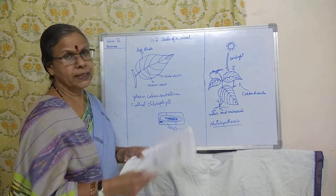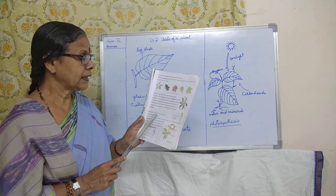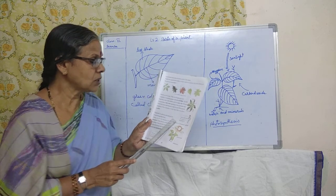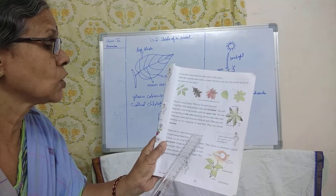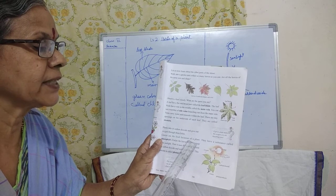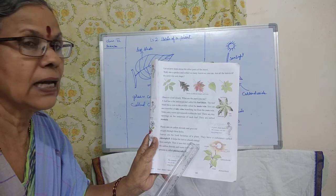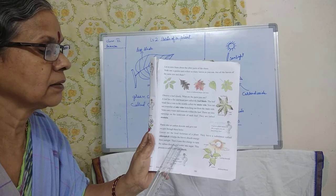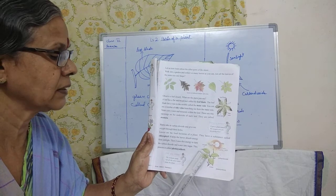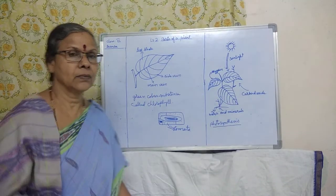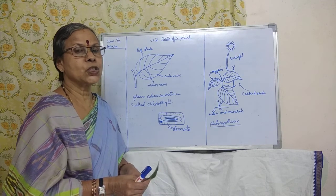Plants take in carbon dioxide and give out oxygen through these holes — the stomata. Leaves are the food factories of a plant. They have a substance called chlorophyll. It helps the leaves absorb energy from sunlight, then uses this energy to turn carbon dioxide and water into sugar. This process is called photosynthesis.